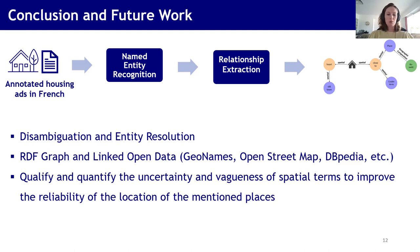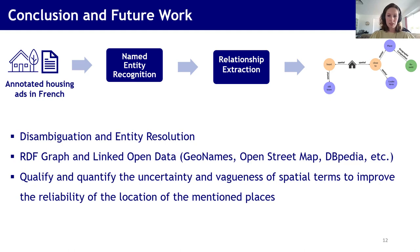In conclusion, we have proposed a two-stage method to automatically retrieve geospatial information from housing advertisements. A major contribution is the recognition of feature and spatio-temporal entities to better understand the spatial context. This workflow can be adapted to other types of text and languages by having an annotated dataset. As future work, we would like to disambiguate the entities, and in particular the toponyms, create an RDF graph, and link nodes to other graphs such as GeoNames, OpenStreetMap, or DBpedia. Finally, we want to quantify the uncertainty and vagueness in the extracted knowledge, and in particular spatial terms such as nearby, five minutes, and short distance, to improve the reliability of the location.